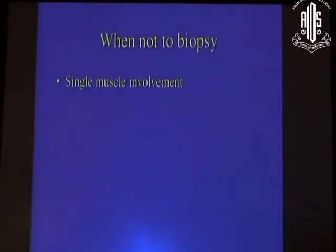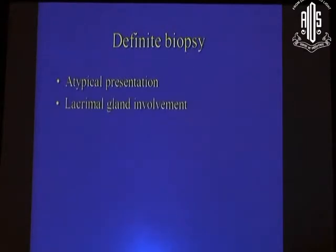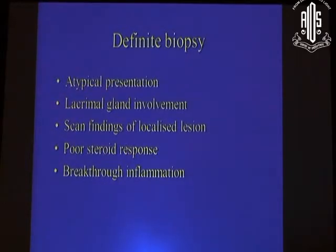When should you biopsy in a case of idiopathic inflammation? You should ask yourself when you shouldn't biopsy — that's how you should approach it. Single muscle involvement: we wouldn't biopsy. Diffuse anterior involvement: we wouldn't biopsy. Sclerosing type picture: obviously you wouldn't biopsy. When it's apical involvement, the biopsy can cause more morbidity than treating it empirically, so you wouldn't biopsy at least initially. Definite biopsy indications: when it's atypical, when there is lacrimal gland involvement, when the scan shows a focal lesion, and if apical and it doesn't respond to usual treatment, or it responds to treatment and comes back again within three months, you would biopsy. Keep repeating the biopsy if you have doubt.